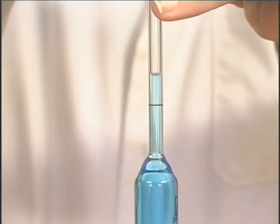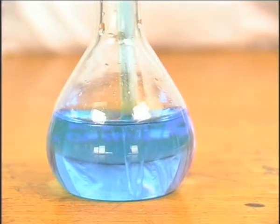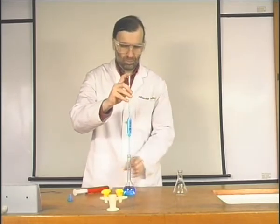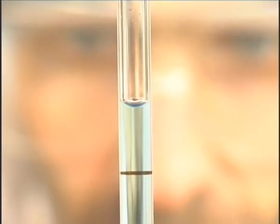When the liquid is a couple of centimeters above the mark, the tip is allowed to rest on the base of the flask. The filler is removed and the forefinger is placed firmly over the top of the pipette to prevent the liquid from escaping.